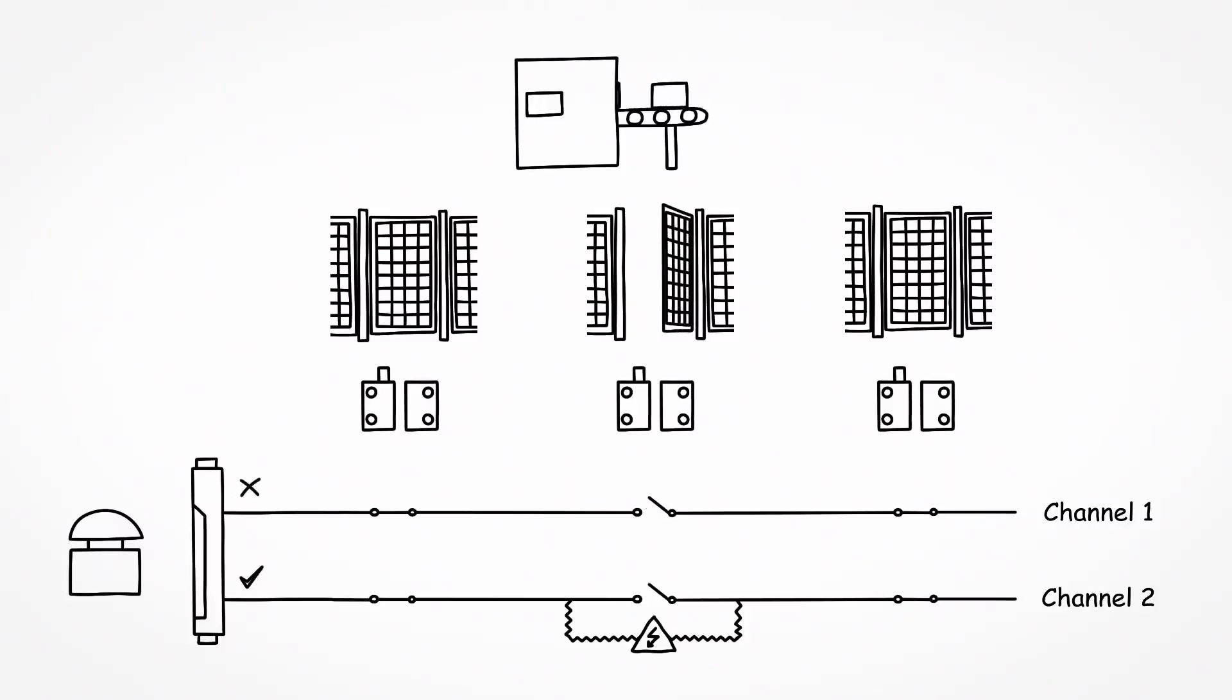If however, door two is then opened, the machine still stops, because the safety relay continues to detect the opening of the door via the first channel and switches off only one channel. The different signals in the first and second channel do not meet the expectations of the safety relay, which identifies this as an error and prevents the machine from restarting.